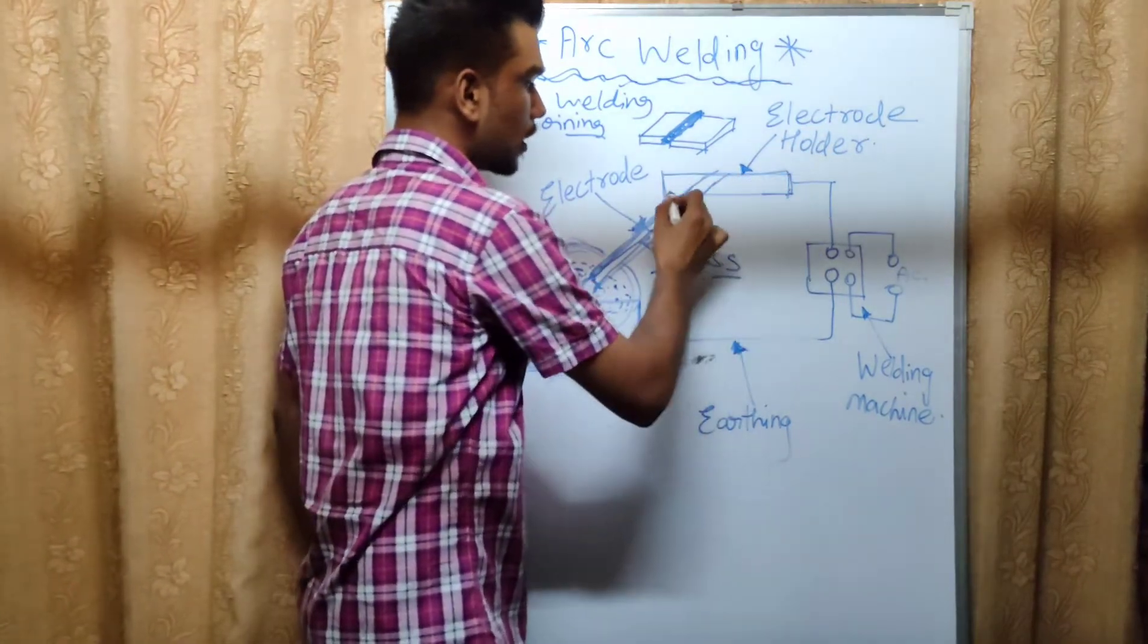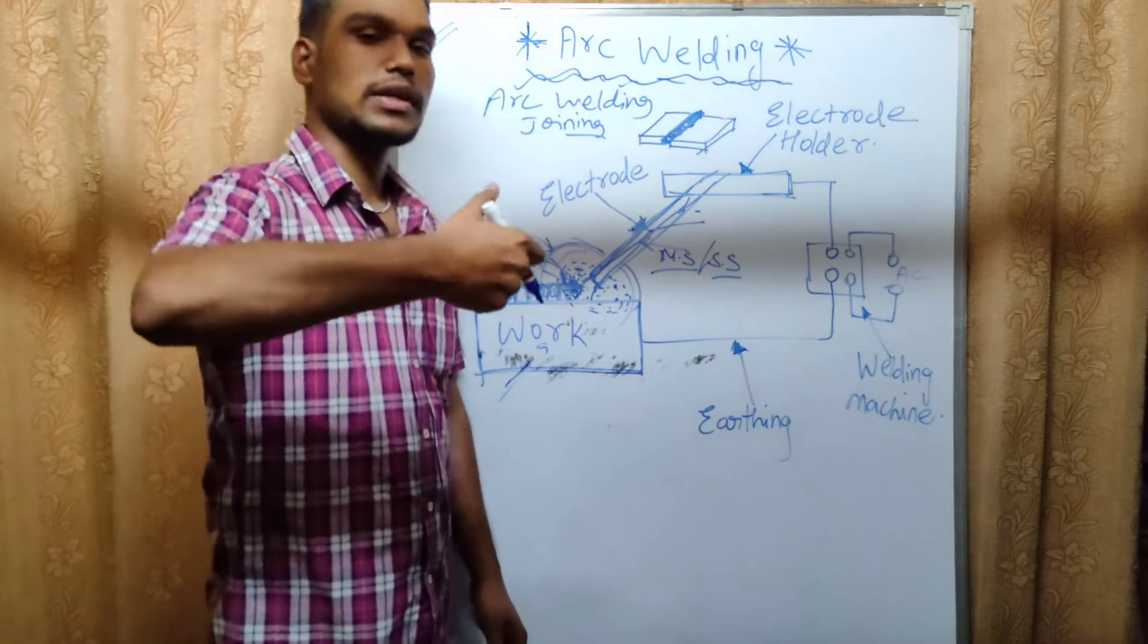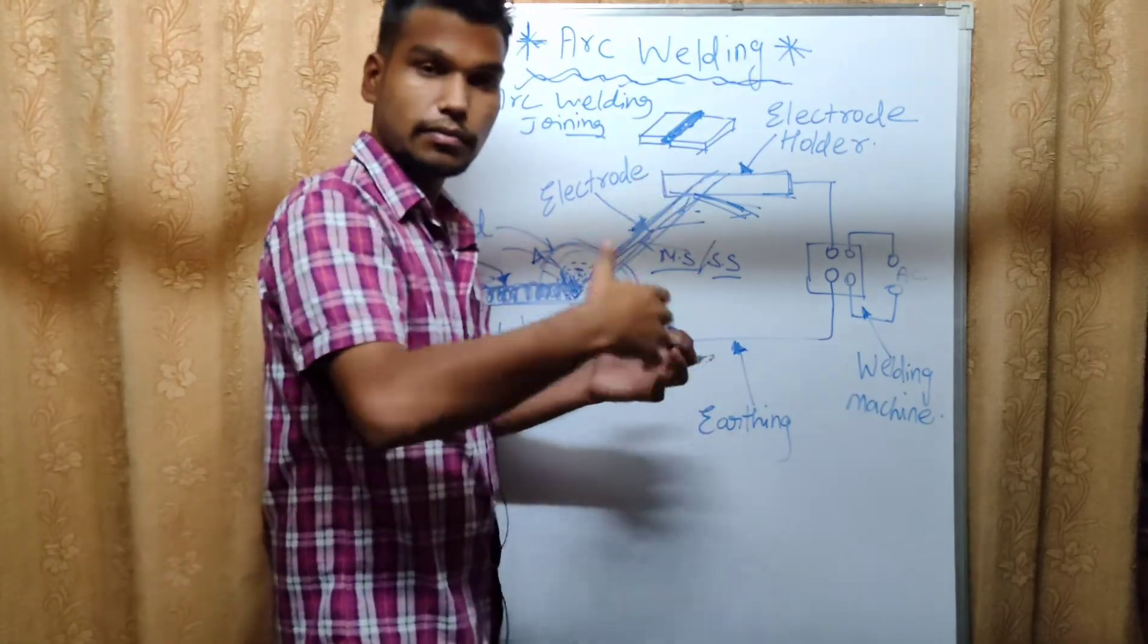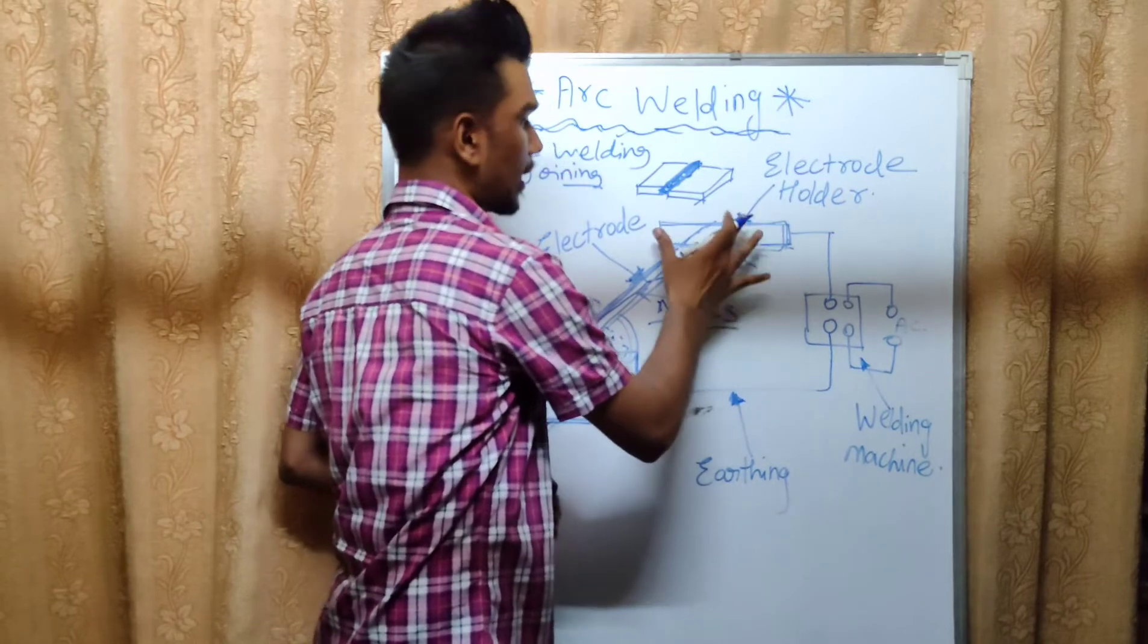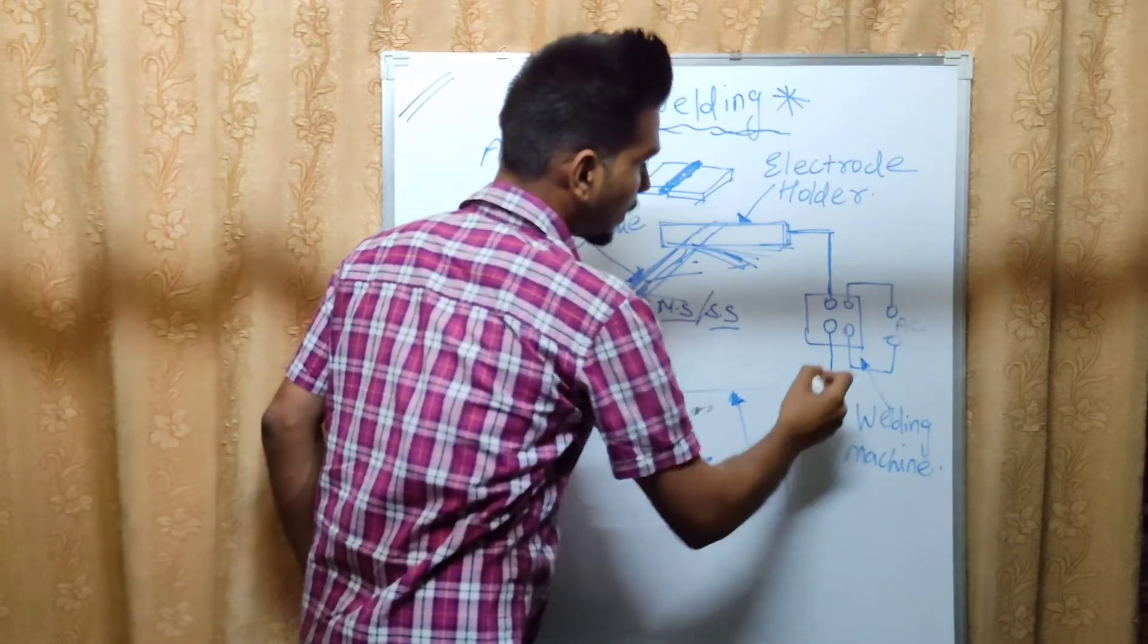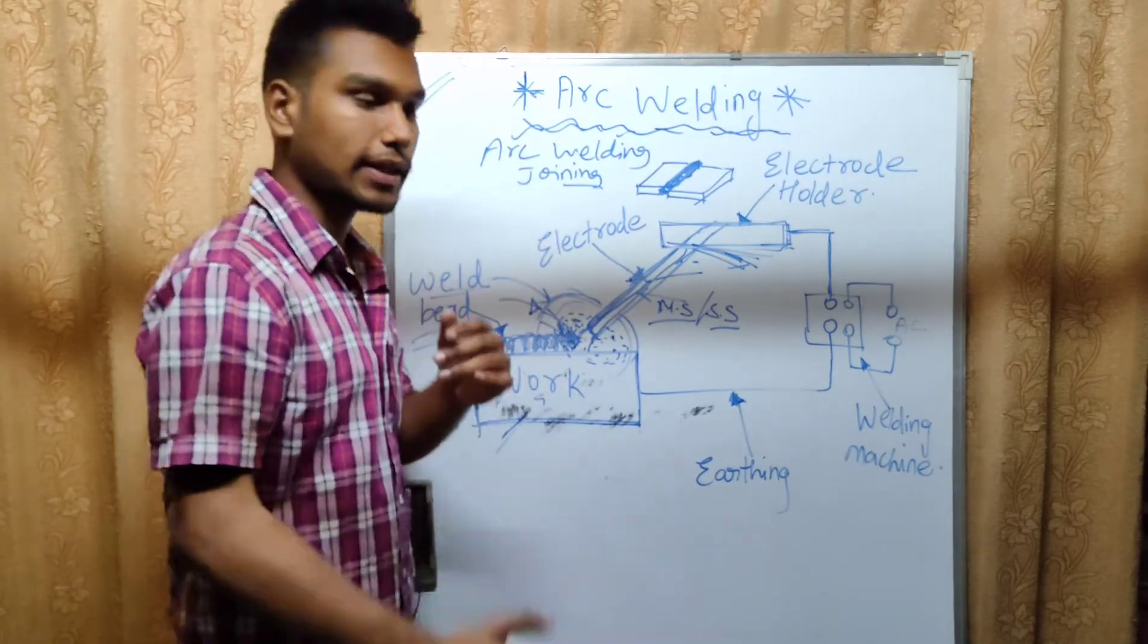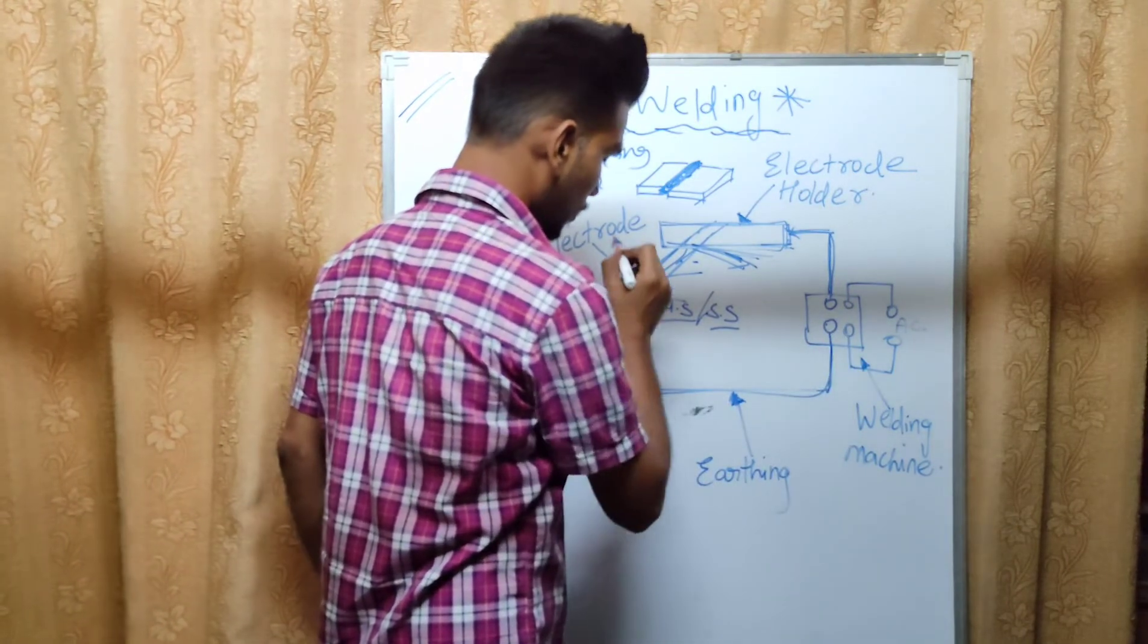This is our electrode holder. Why is this electrode holder? We have a point of electrode holder which is connected to our welding machine, which is a transformer. The other point connects to our workpiece.